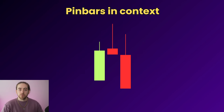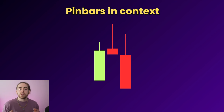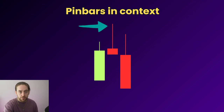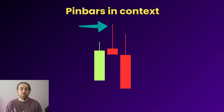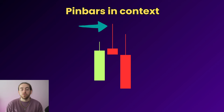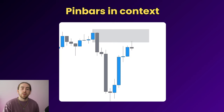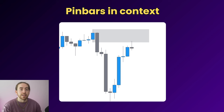An important thing about every candlestick pattern you trade is that it has to be in context. Candlestick patterns will show up pretty much everywhere in the market and most of them are not good to trade. For pin bars, the reversal needs to come from a meaningful area — whether that's a support or resistance level, a supply or demand zone, or an area of liquidity. Wherever you usually look for reversals is where you should be looking for these candles. For me, that is supply and demand zones.